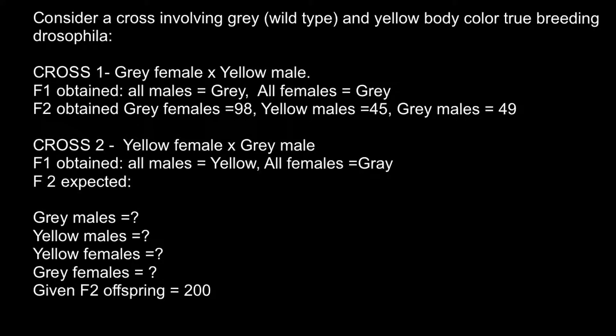Hello and welcome to Niklas' genetics lessons. This video is going to be based on a problem sent to me by one of my subscribers. The problem considers a cross involving gray (wild type) and yellow body color in true breeding Drosophila — Drosophila melanogaster, the fruit fly.